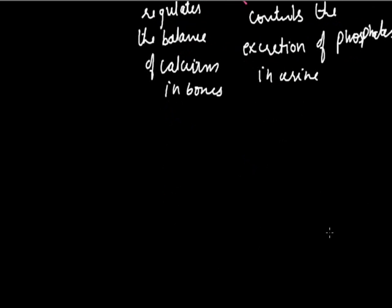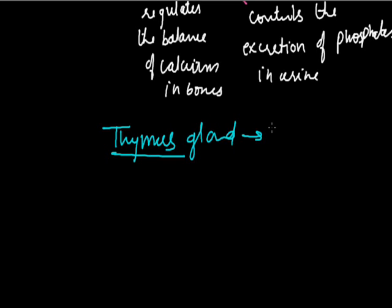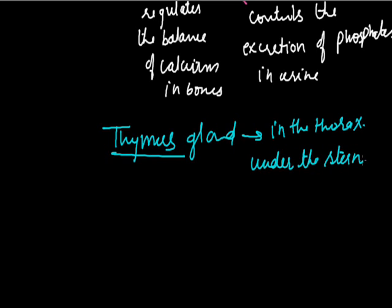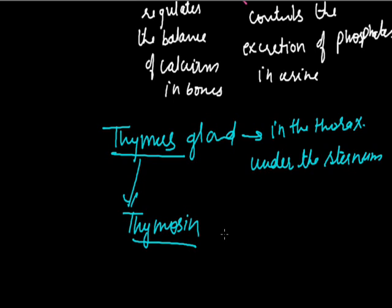The thymus gland is situated in the thorax under the sternum, also called the chest bone, in front of the trachea. It secretes a hormone called thymocin. Thymocin helps in producing antibodies to fight against infections.